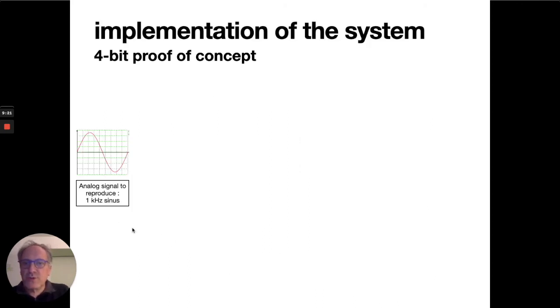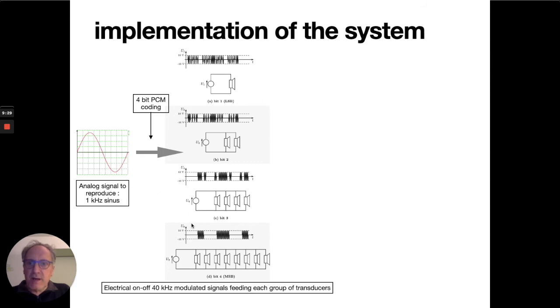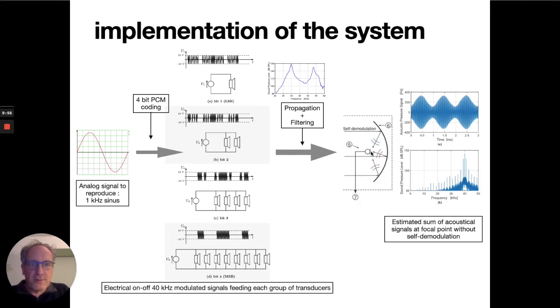Let's try to reproduce a 1 kHz sinusoidal sound wave. This signal has been digitized on 4 bits, and each bit controls the electrical on-off 40 kHz modulated signal feeding each group of transducers. The frequency response of the transducers acts as a filter on the excitation signals, and the pressure generated by each group propagates to the focal point where the microphone is set. Here is the estimated sum of acoustical signals at the focal point, taking into account the frequency response but without self-demodulation.